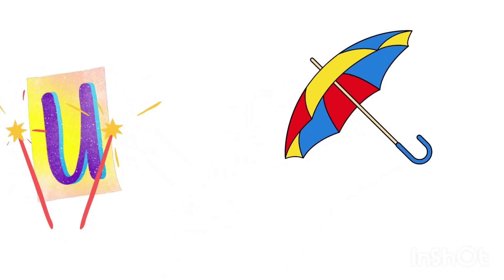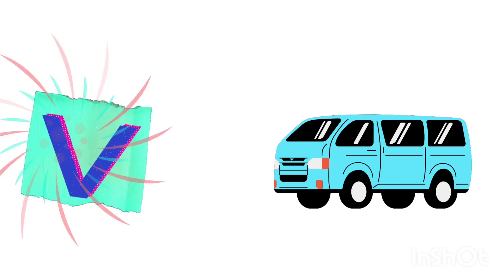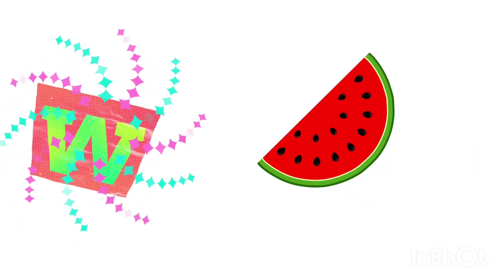U for umbrella, V for van, W for watermelon.